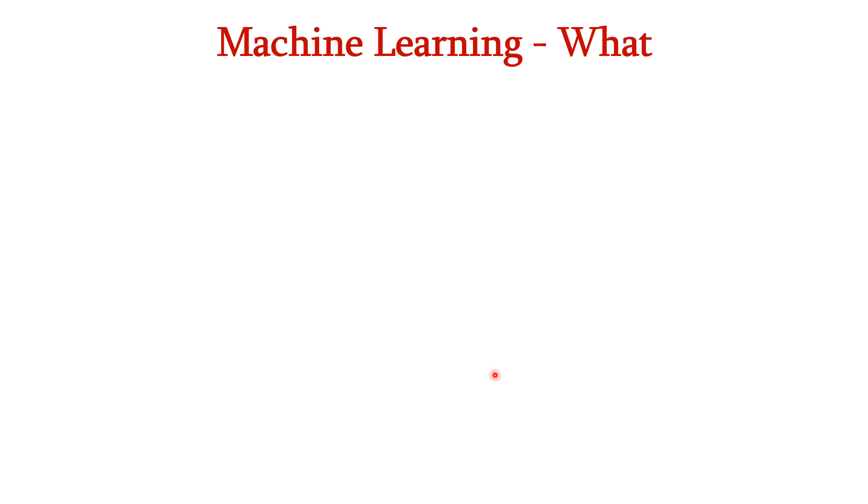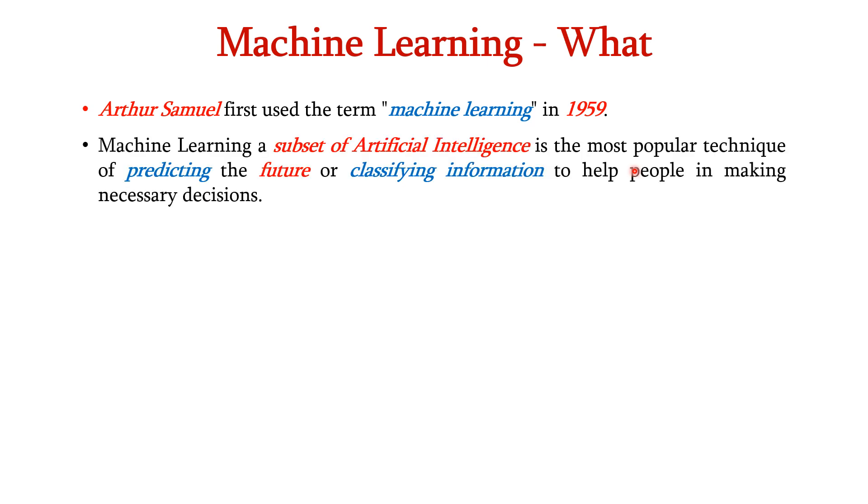Now let us see formally about what is machine learning. Arthur Samuel first used the term machine learning in the year 1959. Machine learning is a subset of artificial intelligence, which is the most popular technique for predicting the future or classifying the information, which helps people in making necessary decisions.